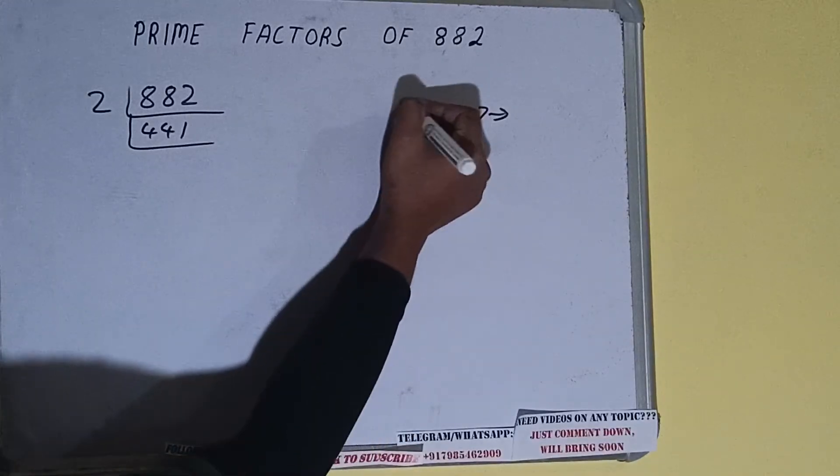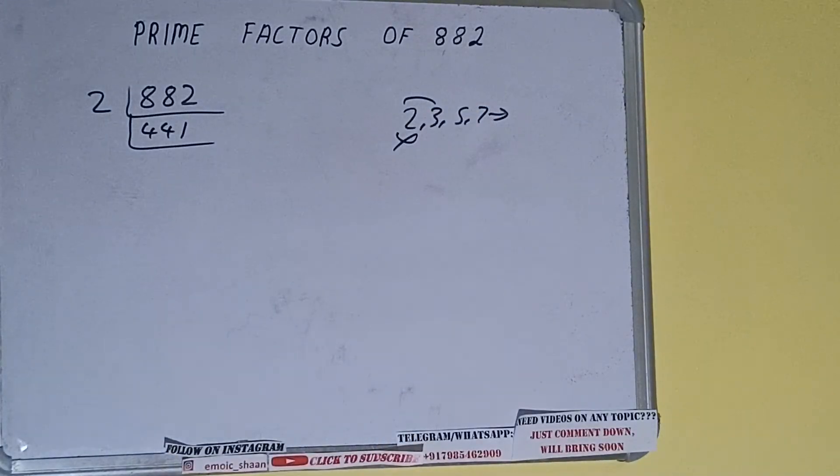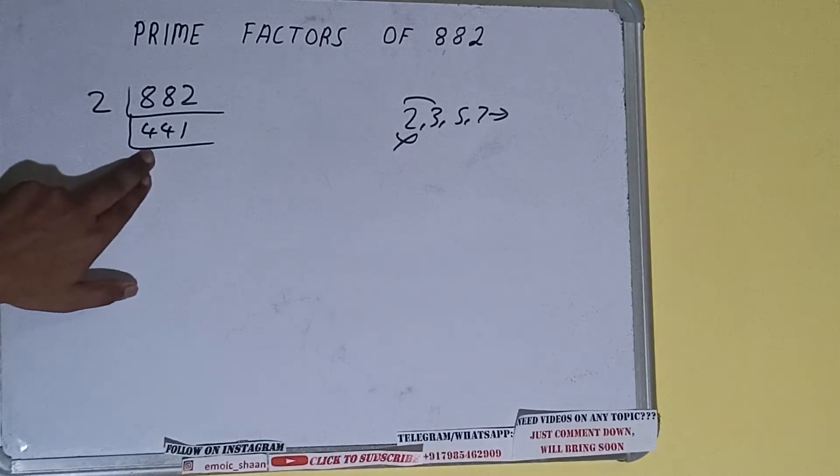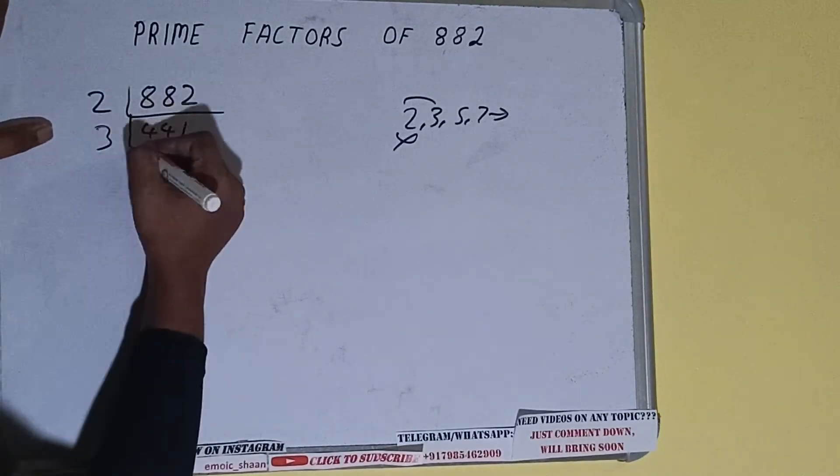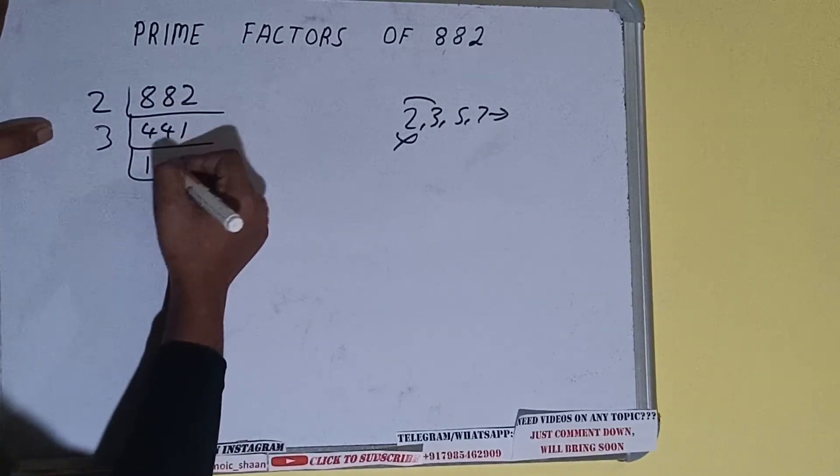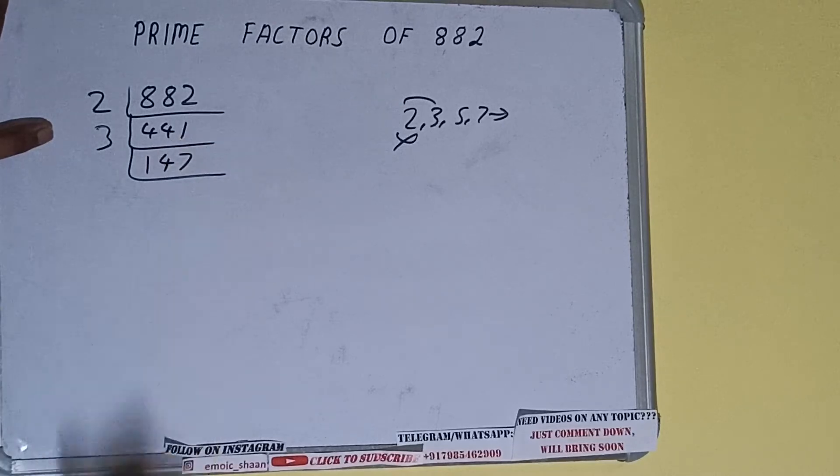So we'll check with the next lowest prime number, that is 3. Is the number 441 divisible by 3? Let's check. It is divisible by 3, so divide it. We'll be having 147.